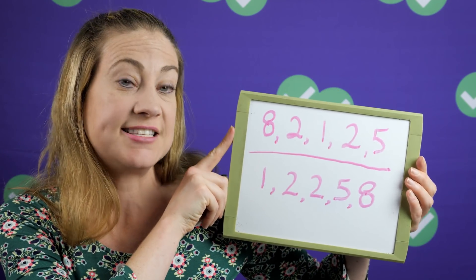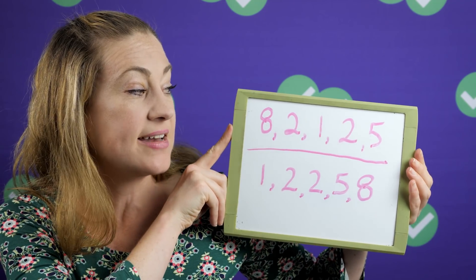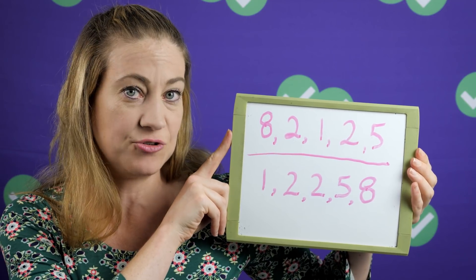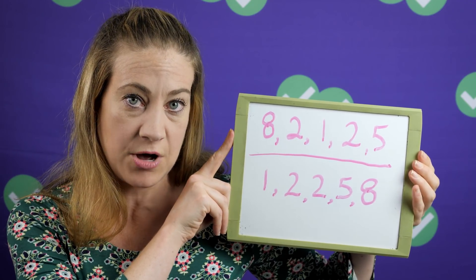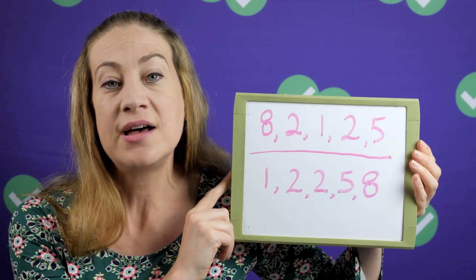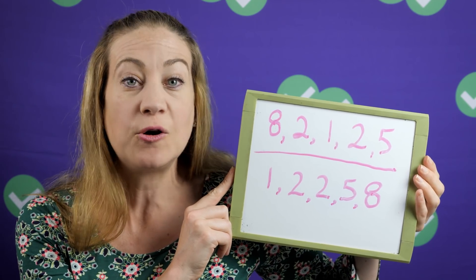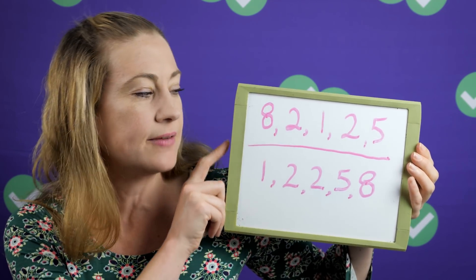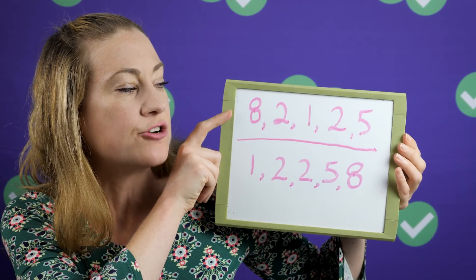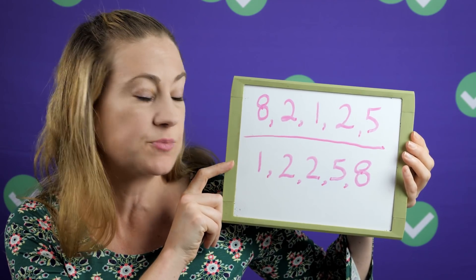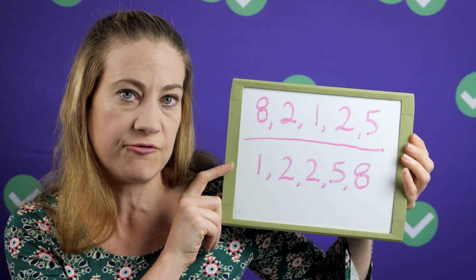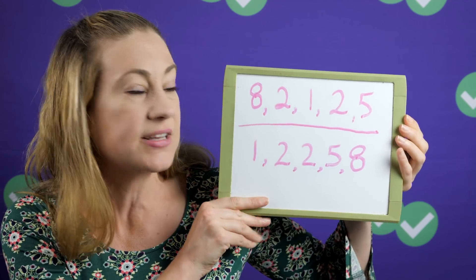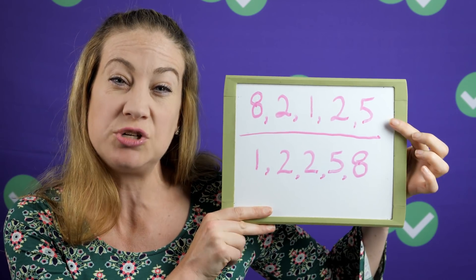Let's go through it with an example using real numbers. Let's pretend you have this set: 8, 2, 1, 2, and 5, and you're asked to calculate the mean, median, and mode. On the ACT exam it won't be quite as straightforward, but this is just for review. The first thing you're always going to do is put them in order from lowest to highest.